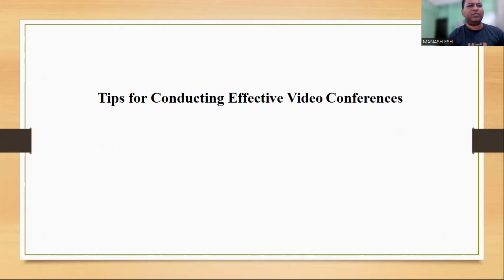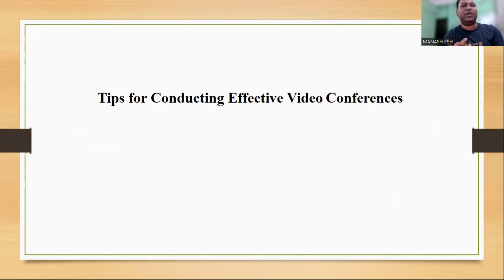Step two: schedule the meeting. Once you have chosen a platform, schedule the meeting and invite participants. Make sure to include the date, time, and meeting link or ID in the invitation. You can also send reminders closer to the meeting date to ensure everyone is aware of the meeting time. Step three: test your equipment and internet connection. Before the meeting, test your equipment and internet connection to ensure they are working properly. This includes your camera, microphone, and speaker. You can use the built-in test features on your video conferencing platform or an external tool like speedtest.net to test your internet speed.